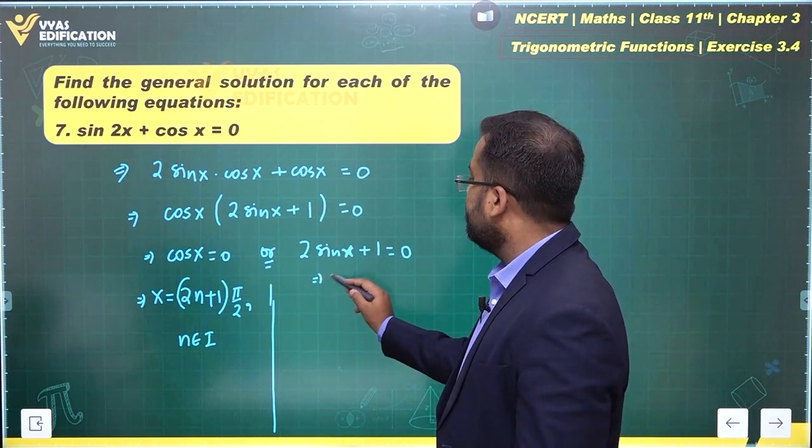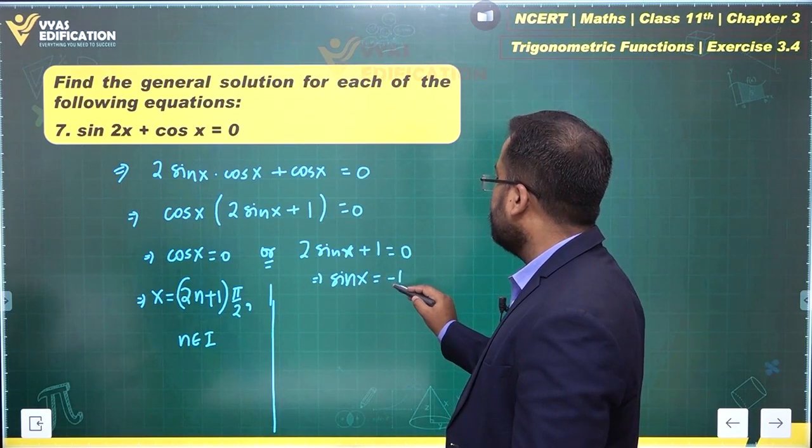What happens in the other case? This gives me sin x equals minus 1 by 2.